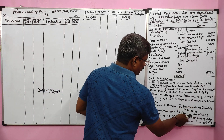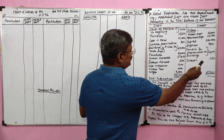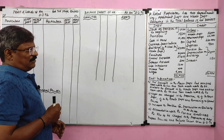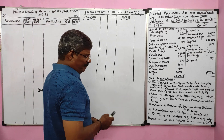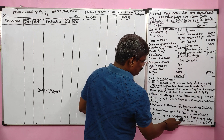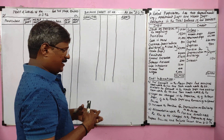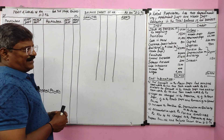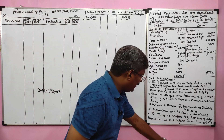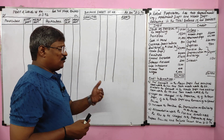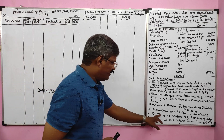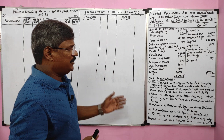Increase the provision for depreciation on building to rupees 30,000. Already we have provision for depreciation of 24,000, so there is an increase of 6,000. Accommodation worth 240 and meals worth 560 to be charged to the proprietor, meaning the owner's accommodation and meals are treated as drawings and charged to the drawing account.